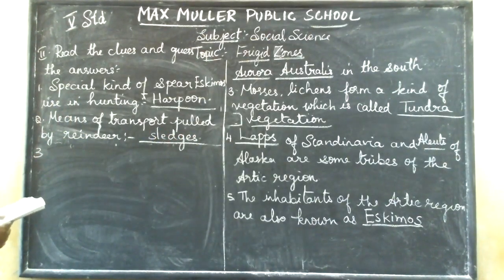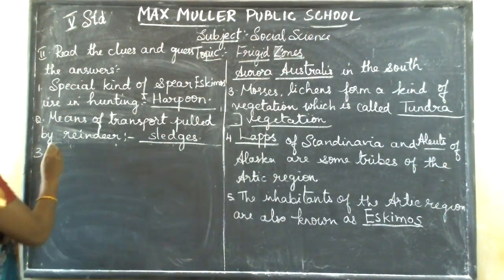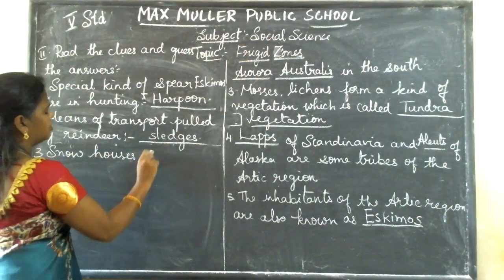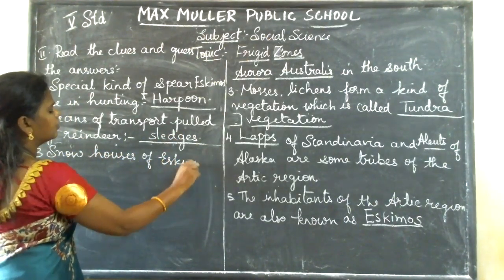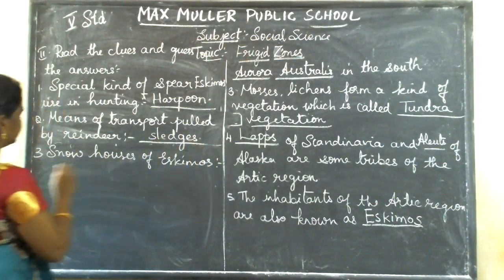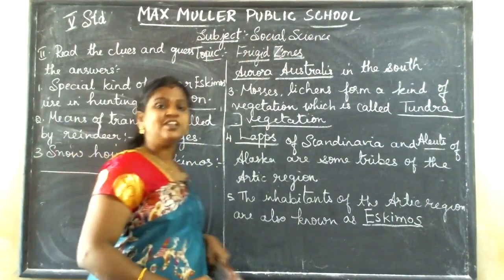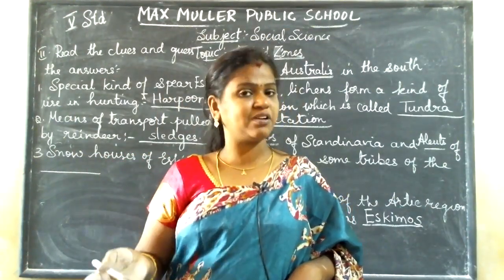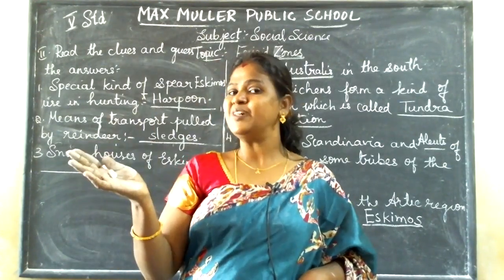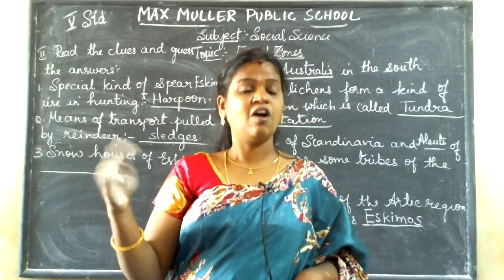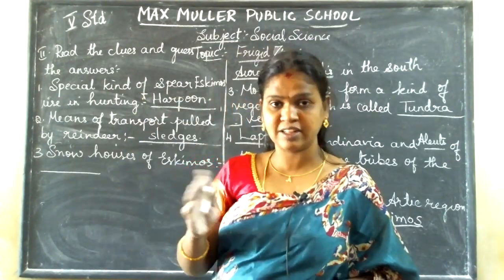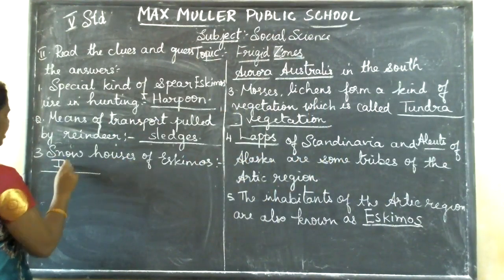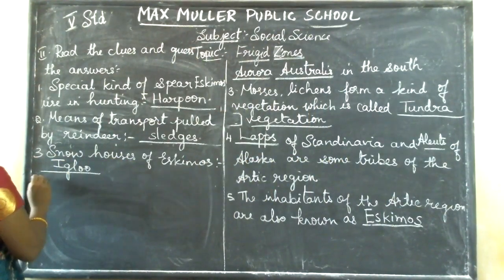The third clue: snow houses of Eskimos. The houses here are built with ice blocks in a circular form. This circular structure built from ice blocks is called an igloo — I-G-L-O-O.